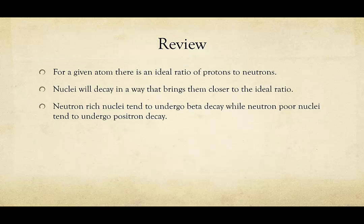Now let's review. For a given atom, there is an ideal ratio of protons to neutrons, as well as several rules that the universe follows for increased stability. Nuclei will decay in a way that brings them closer to the ideal ratio and will attempt to follow those rules. Neutron-rich nuclei tend to undergo beta decay, while neutron-poor nuclei tend to undergo positron decay.